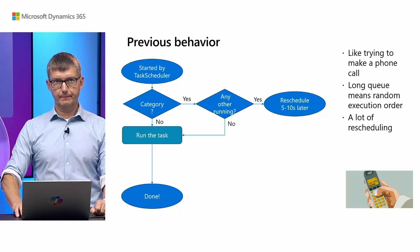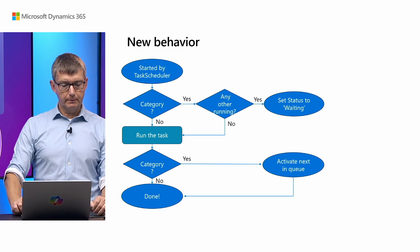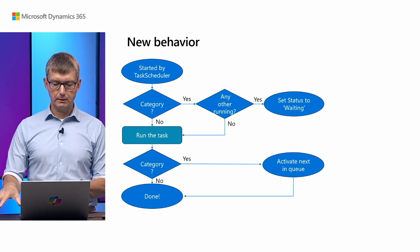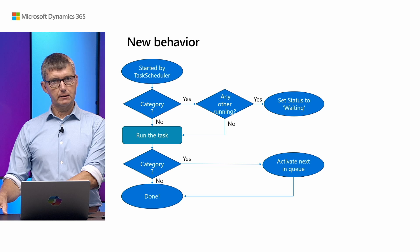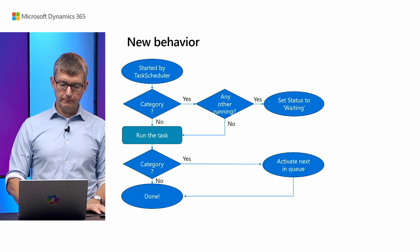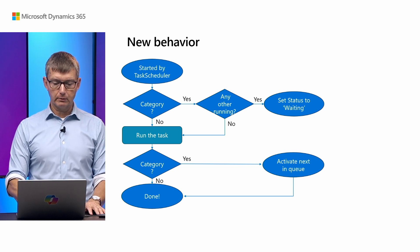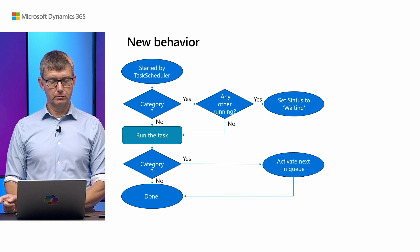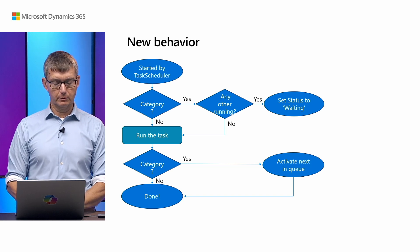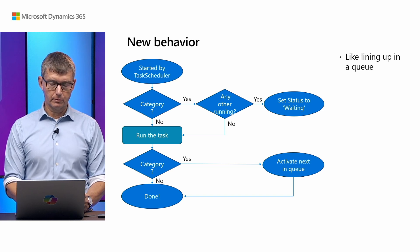The new schema keeps the normal flow the same. But if there's a category and someone else is running, we go to sleep — we set the status to 'waiting' and schedule a task that is not ready. We don't do anything more. The process that was running, when it's done, will activate the next in queue, meaning you or someone else. Then they're done and you can start your turn. This is more like actually lining up in a queue, as you're supposed to.